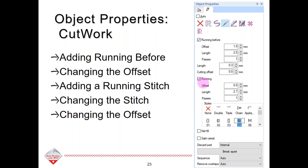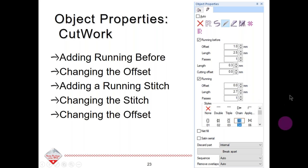You can also add a running stitch, which occurs after the cutout piece. It's not used as much because if you check this, realize that you'll have to bypass the cut stitches in order to stitch the running stitch before the piece is cut out — otherwise there's nothing holding that cutout piece in place. You can change the type of stitch, change the offset, add a net fill to your cutout area, and add a satin serial. There are lots of different things you can do in the Cutwork object properties.